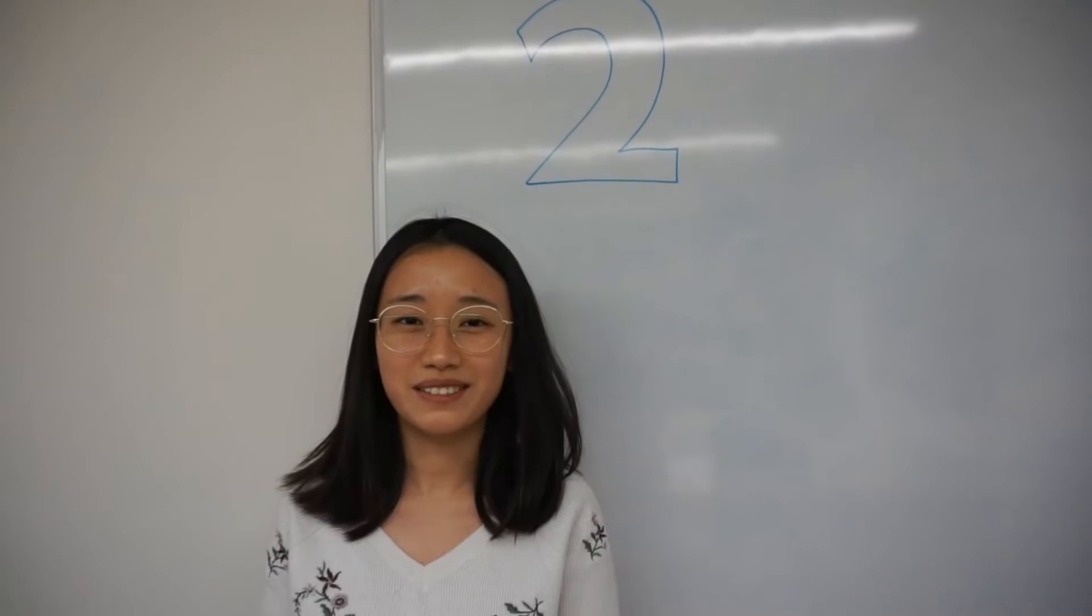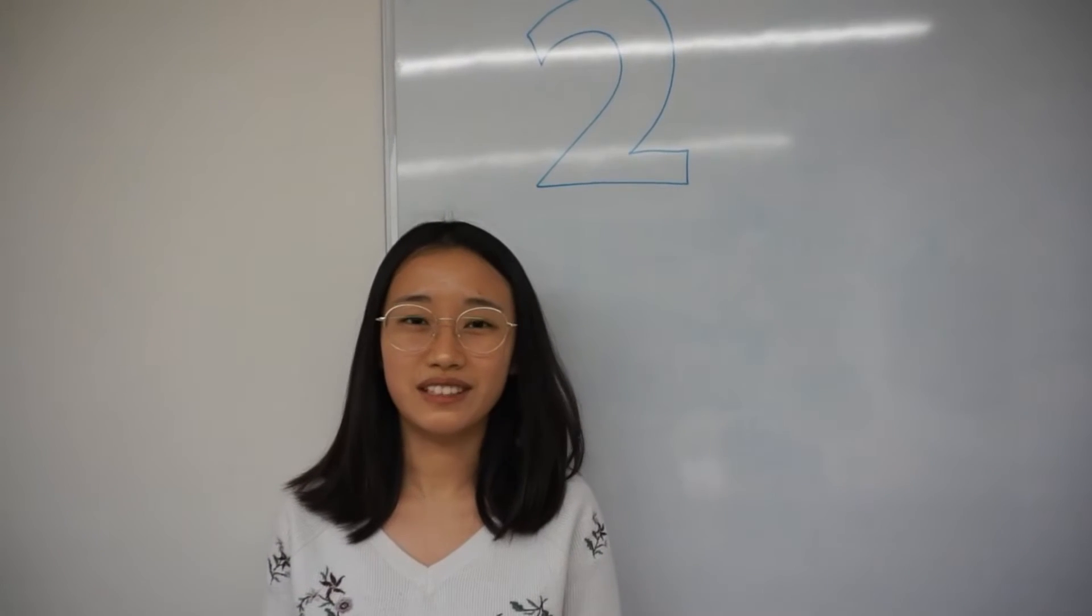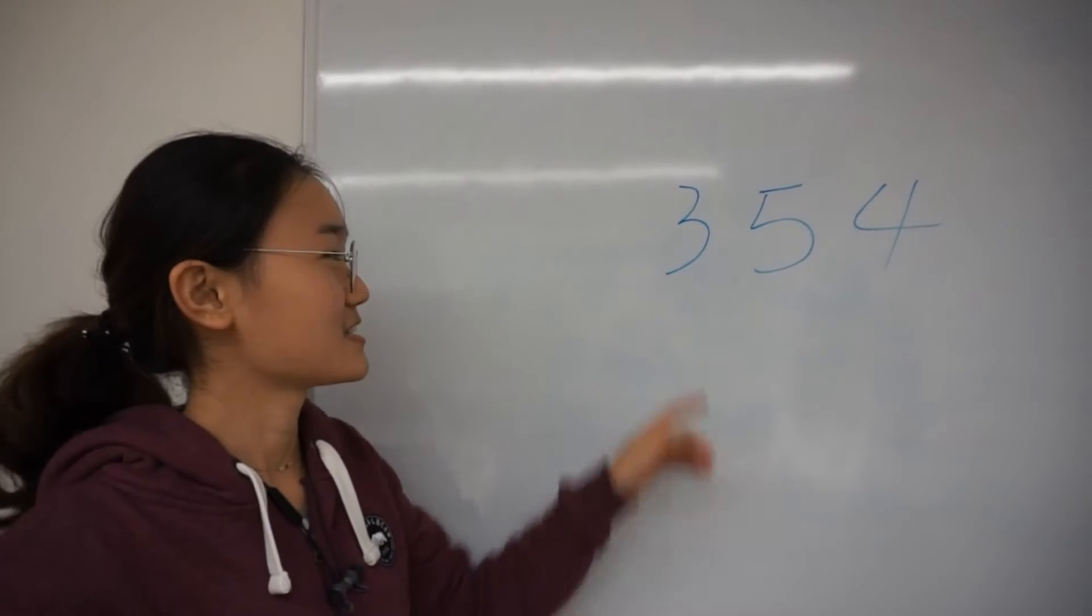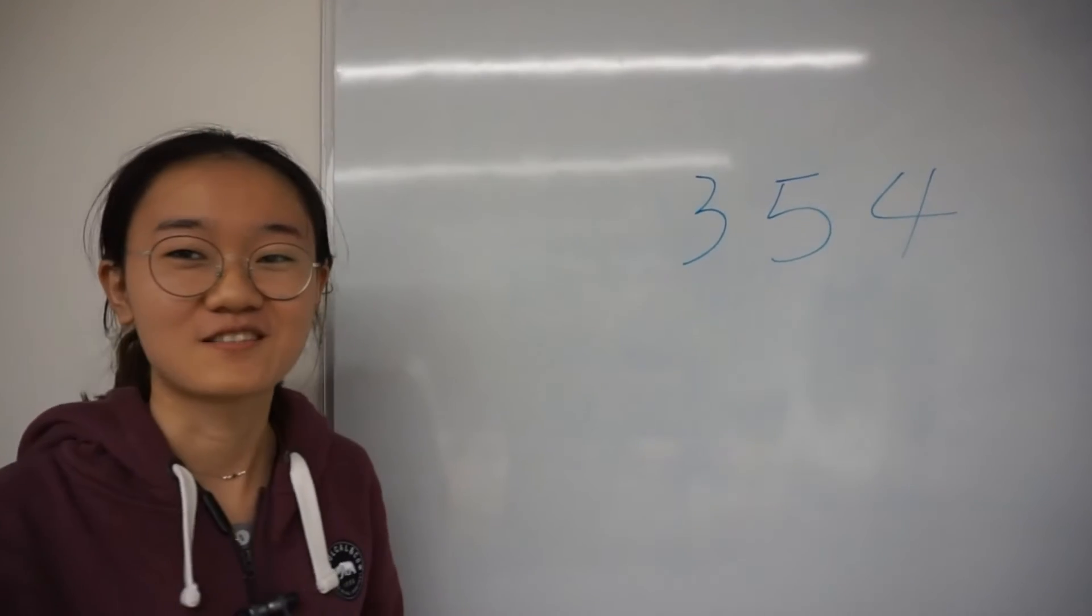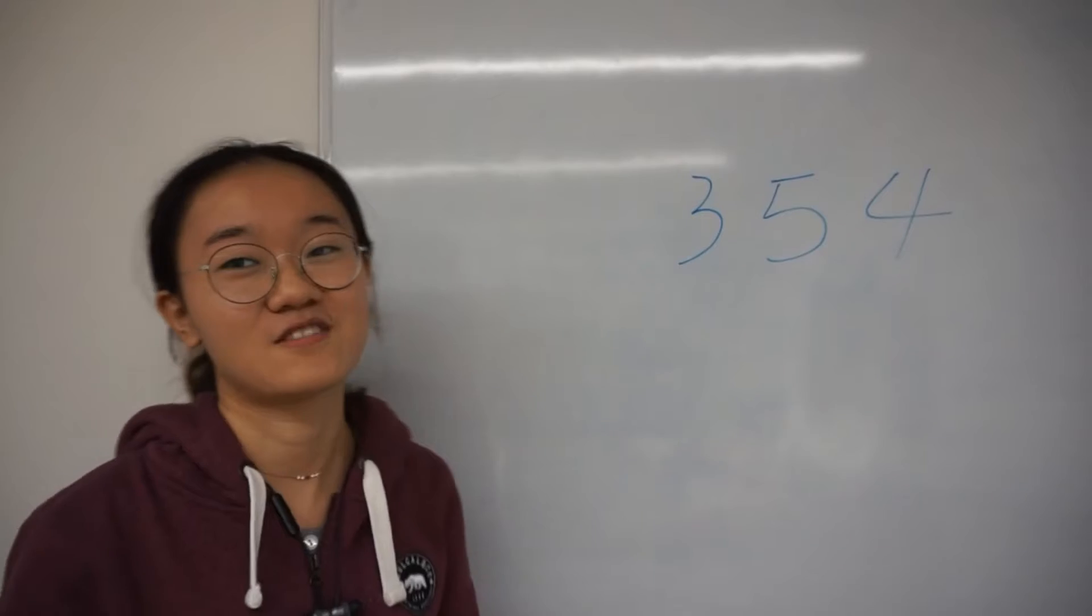A number is divisible by 2 if its last digit is 2. For example, 354 is divisible by 2 because 4 is divisible by 2.